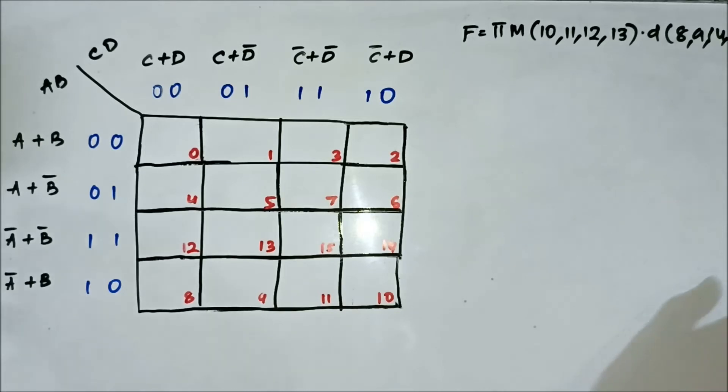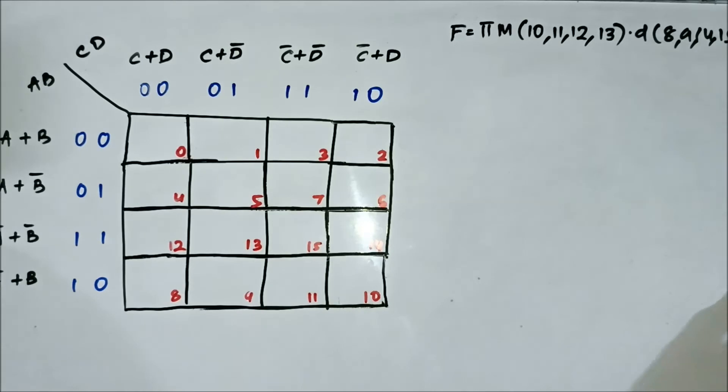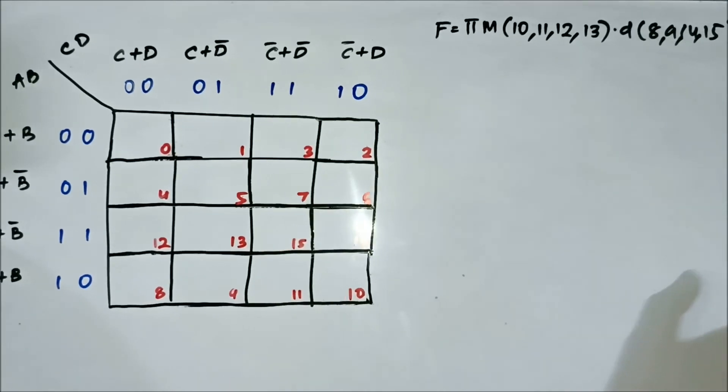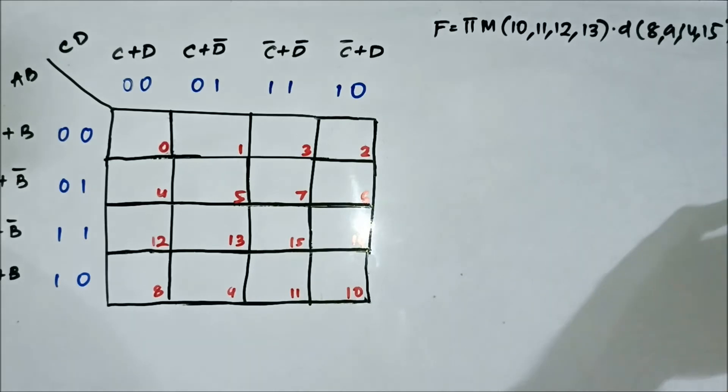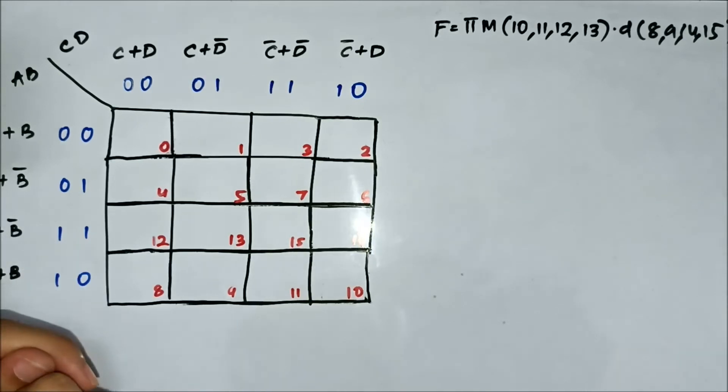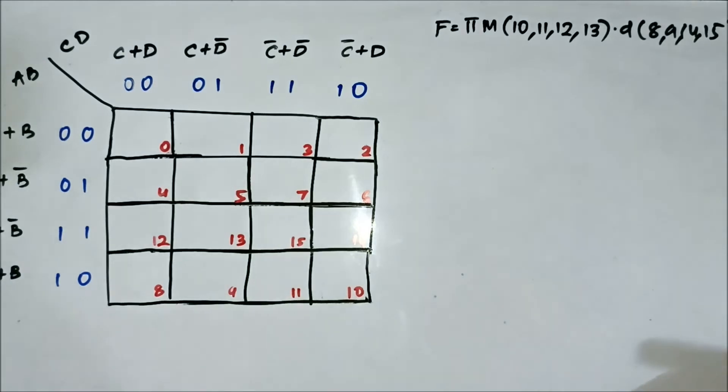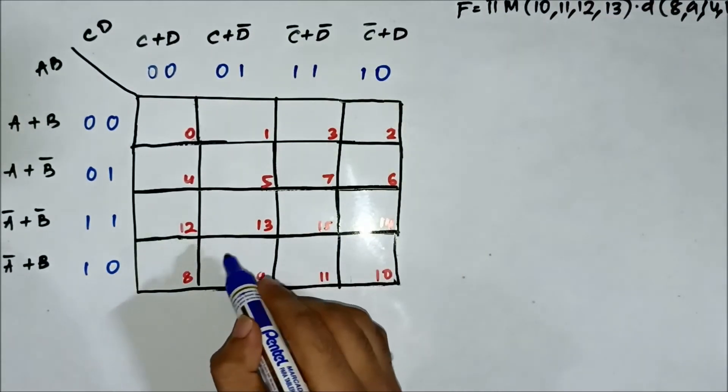Here is another question on the four variable POS don't care condition K-map. We have the POS expression given in terms of the max term values and the don't care values. The max term values are 10, 11, 12, 13. The don't care values are 8, 9, 14, 15. We will mark the respective values.